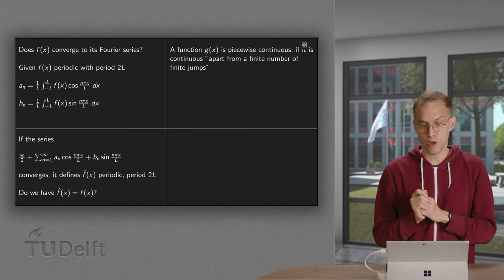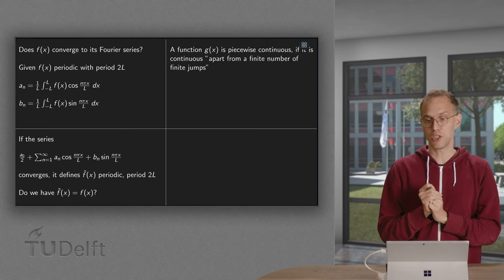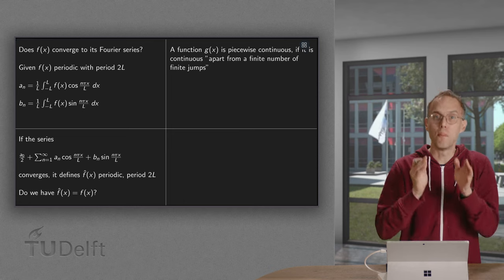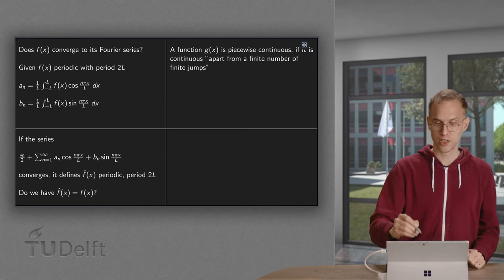we need the notion of piecewise continuity. A function g(x) is piecewise continuous if it's continuous apart from a finite number of finite jumps. So what do we mean?